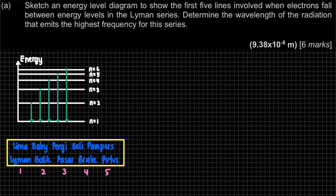For comparison, if the question asked for the Balmer series, the ground state would be N equal to 2, so the first possibility would be N=3 to N=2, then N=4 to N=2, N=5 to N=2, et cetera. But in this question it asks for the Lyman series, so that's the first part of the question.